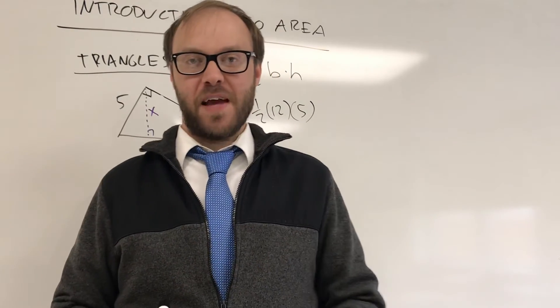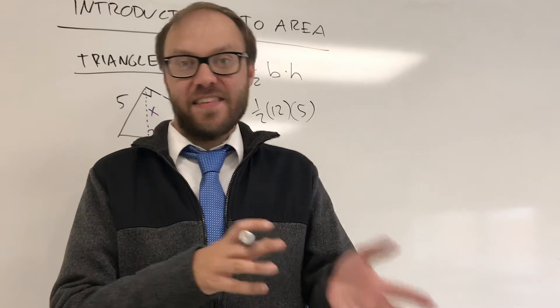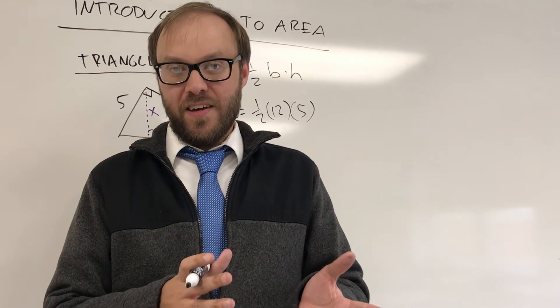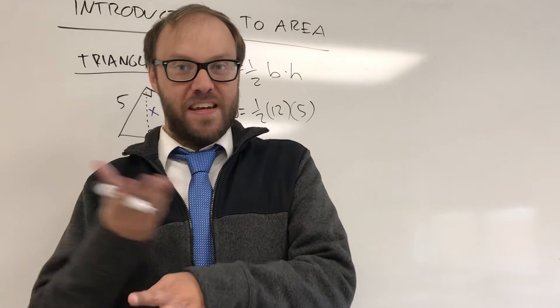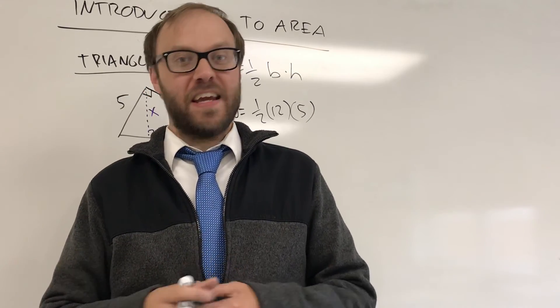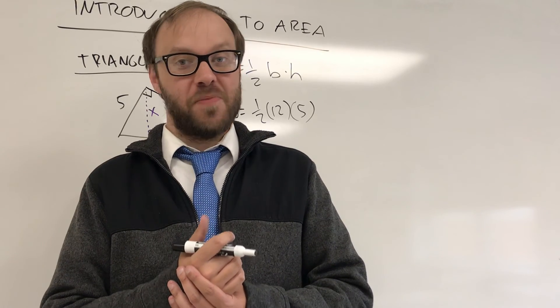So just a little strategy there. Sometimes if you can find the area using a different pair of sides and altitudes, you might be able to use that same area to find some missing dimension using a different base and a different altitude. Kind of a neat trick, and it is one that you're going to see a couple of times throughout this chapter, so be on the lookout for it.